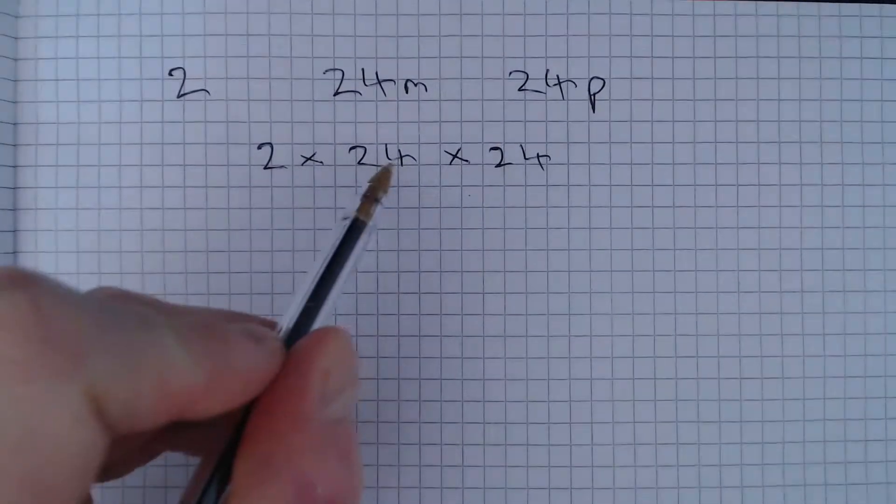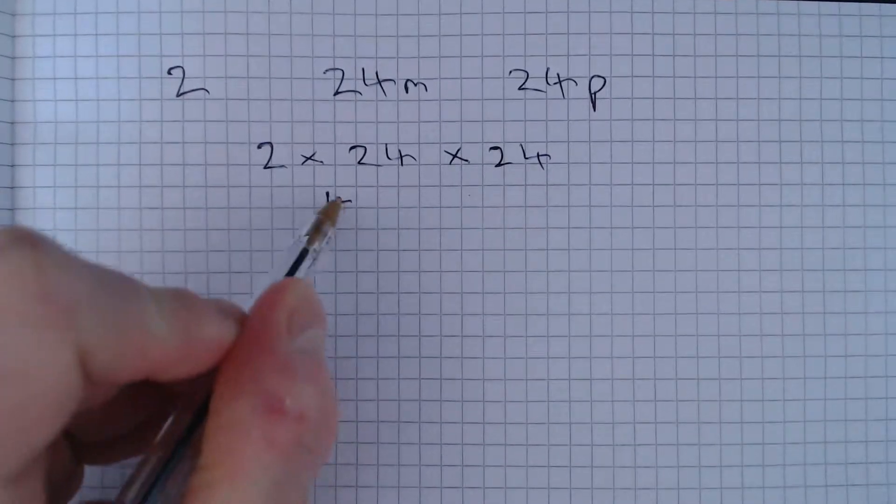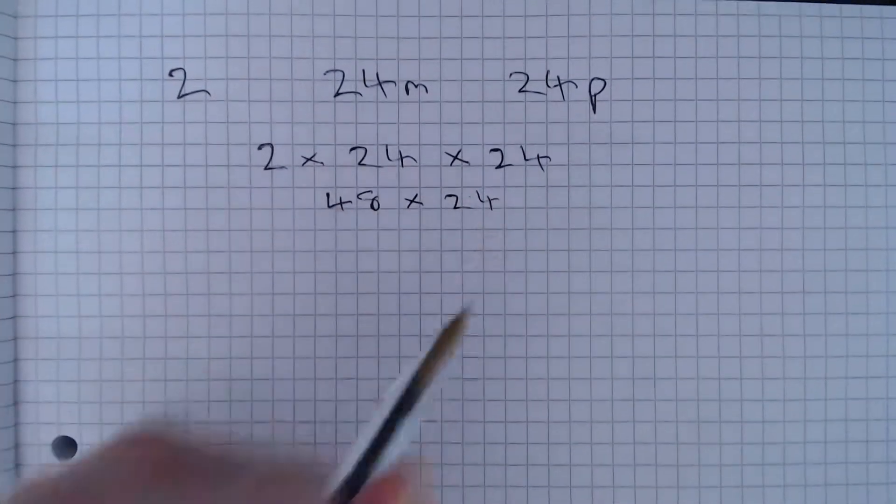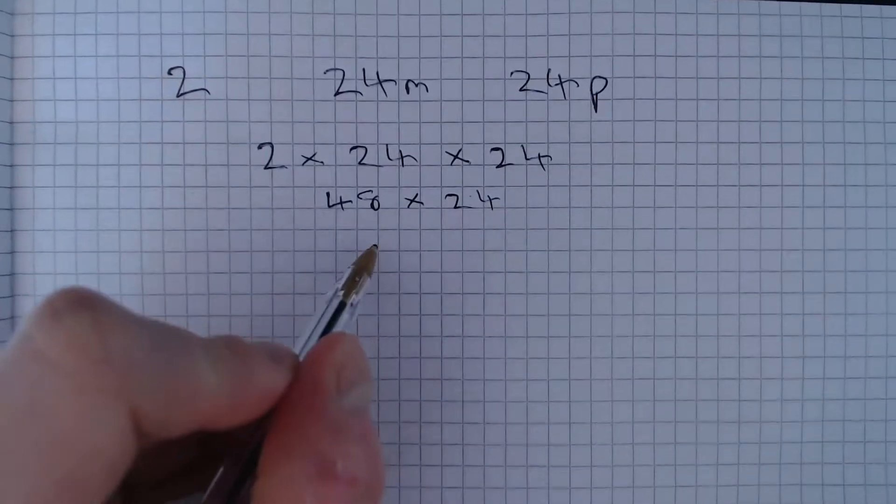So the way I'm going to do this, I'm going to first do 2 times 24, so that's going to give me 48. So we need to do 48 multiplied by 24 and I'm going to do that as follows.